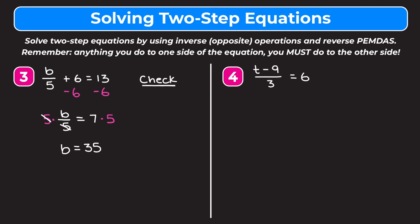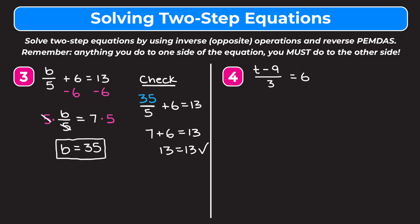Instead of b over 5 plus 6 equals 13, we plug in 35 for b: 35 over 5 plus 6 is equal to 13. 35 divided by 5 is 7, so we have 7 plus 6 equals 13. 7 plus 6 is 13, so 13 equals 13. Both sides of our equation are equal, so b equals 35 is correct.